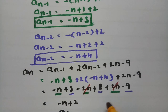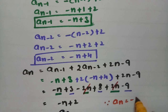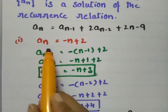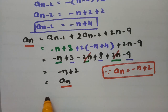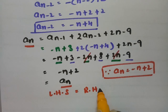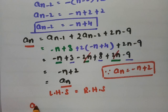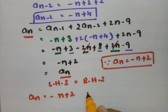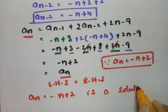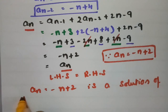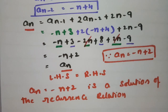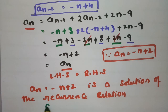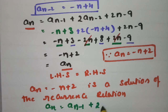Since An is given as -n + 2, and we obtained -n + 2 after substitution, LHS equals RHS. Therefore An = -n + 2 is a solution of the recurrence relation An = An-1 + 2·An-2 + 2n - 9.